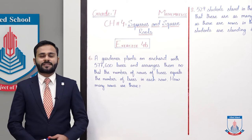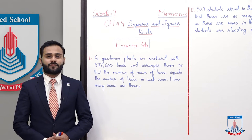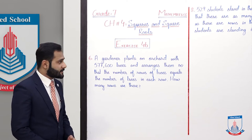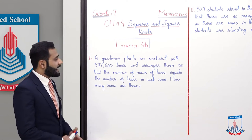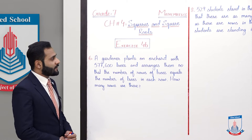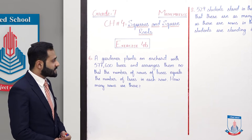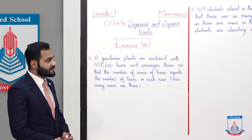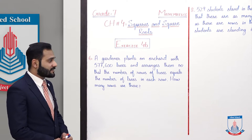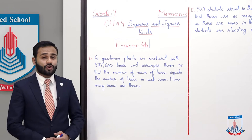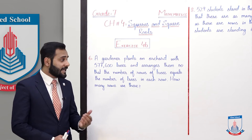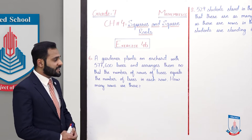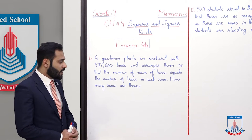Squares and square roots, exercise 4b, question number 6. A gardener plants an orchard with 57,600 trees and arranges them so that the number of rows of trees equals the number of trees in each row.